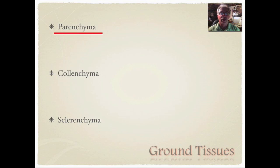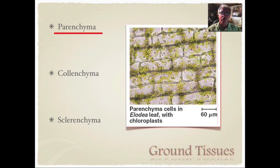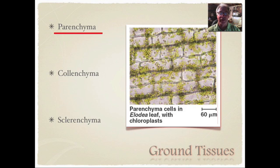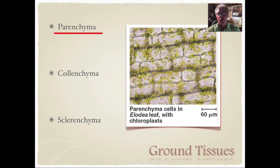Parenchyma is essentially the bulk of the cells you'll find in a plant. They're used for regular daily maintenance and repair — things like the chloroplasts, the mesophyll, and the palisade layer. They're relatively thin-walled, containing some lignin and cellulose, and are pretty uniform. Parenchyma cells do most of the heart and soul of a plant.